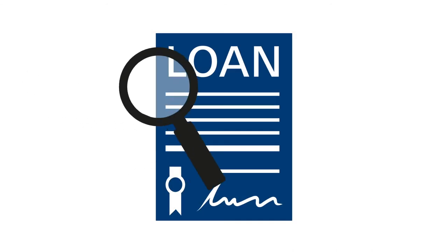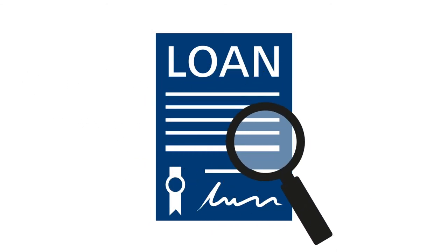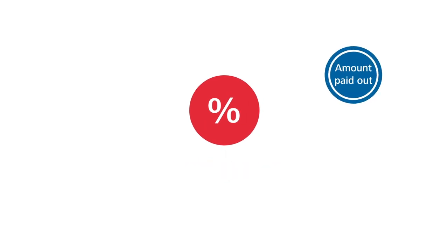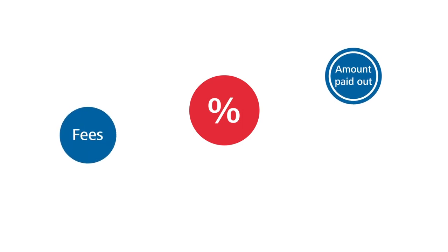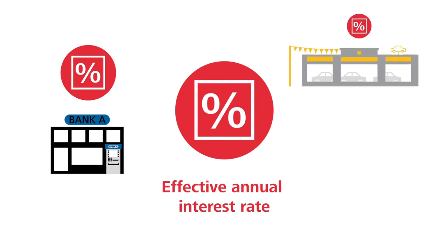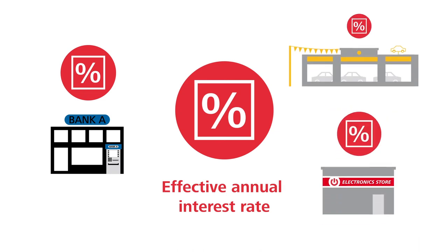Some costs attached to a loan are, however, not immediately recognizable. For instance, it may be the case that the actual amount paid out to the borrower is less than the specified loan amount. Moreover, the borrower may be charged an additional fee on top of the loan amount. The effective annual interest rate, as it is known, encompasses all the costs attached to a given loan. Banks, as well as car dealerships or electronics stores, are all obliged to state the effective annual interest rate charged on a purchase so that the consumer can compare rates among different providers.